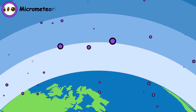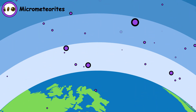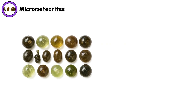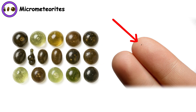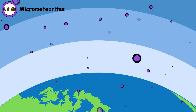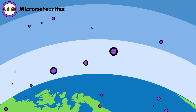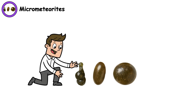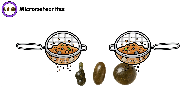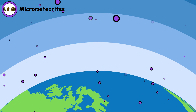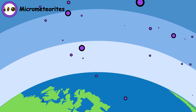Micrometeorites. Every day, approximately 100 tons of micrometeorites rain down on Earth — tiny space particles smaller than grains of sand. These cosmic dust particles survive atmospheric entry because their small size prevents them from heating enough to vaporize completely. You can even collect micrometeorites yourself using magnets on rooftops or by filtering sediments. Under a microscope, they show spherical shapes created by surface tension as they partially melted during atmospheric entry.